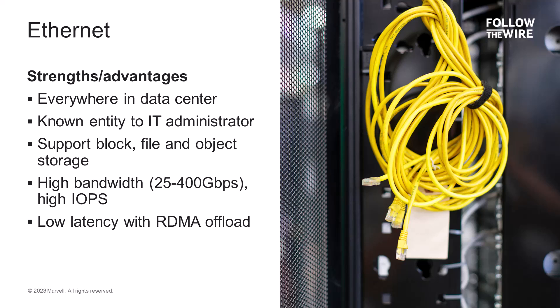Let's start by looking at some of the good aspects of choosing Ethernet for storage networking in block storage applications. Ethernet is widely used in the data center and it's well known to the IT staff. As mentioned on the prior slide, Ethernet can support object, file, or block storage formats. Ethernet also supports high bandwidth, including 25 gig, 100 gig, and even up to 400 gigabits per second per connection. For low latency applications, remote direct memory access, or RDMA, can be implemented on Ethernet to offload the I/O processing and provide very low I/O latencies.